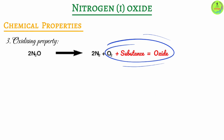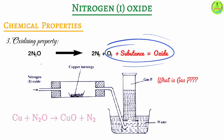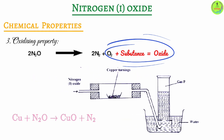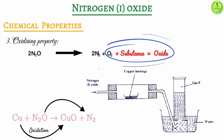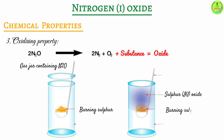When nitrogen one oxide is passed over heated copper, a black residue of copper(II) oxide is formed. The heat causes nitrogen one oxide to decompose into nitrogen gas and oxygen gas; copper then reacts with the oxygen gas to form copper(II) oxide. This is a redox reaction — the copper metal is oxidized to copper(II) oxide and nitrogen one oxide is reduced to nitrogen gas. Similarly, burning sulfur placed in a jar of nitrogen one oxide continues burning brilliantly, forming sulfur dioxide (SO₂) and nitrogen gas.